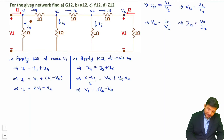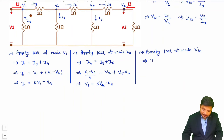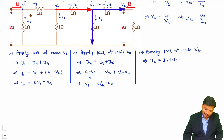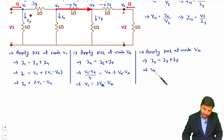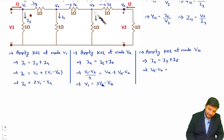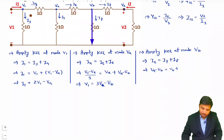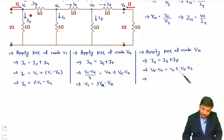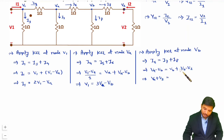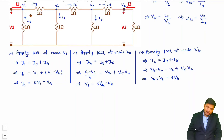Now let us apply KCL at node VB. Entering current I6 equals leaving currents I7 plus I8. I6 is VA minus VB, I7 is VB, and I8 is VB minus V2. Rearranging: VA plus V2 equals 3VB. This is equation 3.